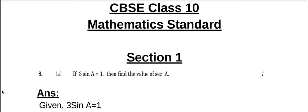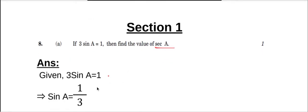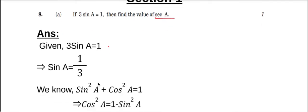Section 1, question number 8a: if 3 sine a equals 1, then find the value of sec a. So here we have to find the value of sec a. Given 3 sine a equal to 1, that implies sine a equal to 1 third.